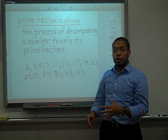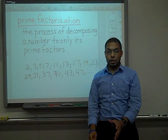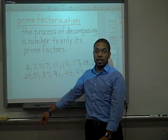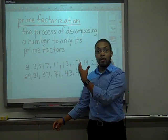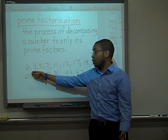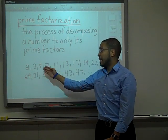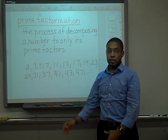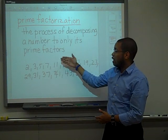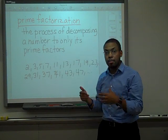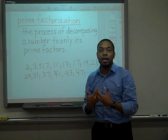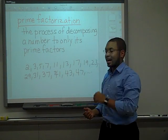What we're going to do is think of these numbers. We're going to always ask ourselves: can 2 go into the number? If it can, we write it down. If 2 can't go into it, we ask: can 3 go into it? Can 5 go into it? Can 7 go into it? Can 11 go into it? We use this sequence of prime numbers to break down a number into only its prime factors.